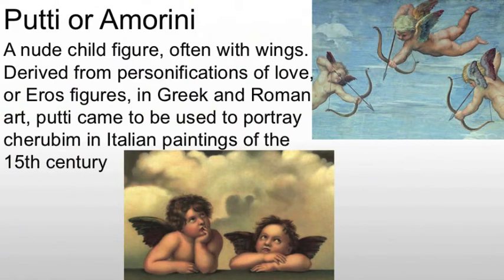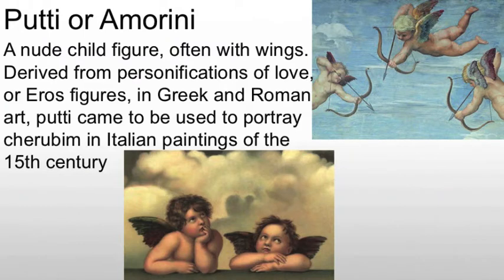Then we have putti. These are just irritating if you really study the Renaissance, but it's basically a nude child figure, usually with wings. It comes from the classical world, where it meant a personification of love or eros. When we get to Italian painting in the Renaissance, putti takes on the idea of cherubim — a specific form of angel. According to the Bible, this form of angel is something you can't look at; it's horrific and you will burst into flame should you ever see it. In the Renaissance, that's translated into a winged baby figure because, well, that's a lot nicer to look at than certain death.